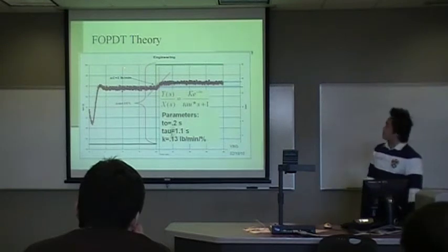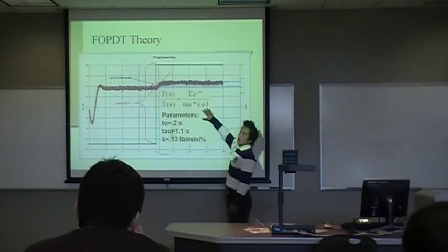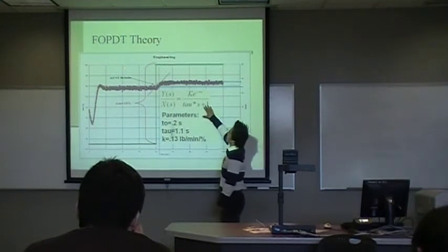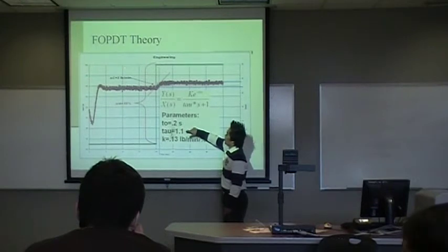FOPDT Theory. That's an equation I found in the book and in this equation we have parameters of T0 and Tau and K.